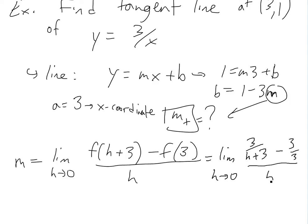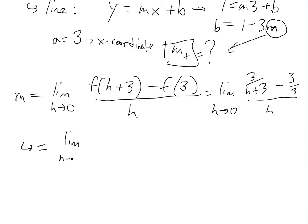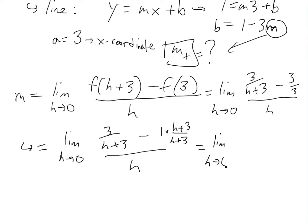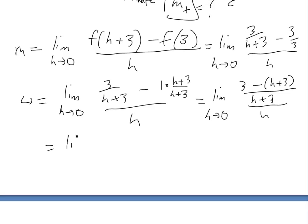So we have the limit as h approaches zero of: 3 over (h plus 3) minus 1, all over h. Simplifying: 3 over (h plus 3) minus 1 — we multiply 1 by (h plus 3) over (h plus 3) to get a common denominator. Adding them gives: 3 minus (h plus 3), all over (h plus 3), over h. Expanding the numerator: 3 minus h minus 3, so the 3s cancel, leaving negative h over (h plus 3), over h.